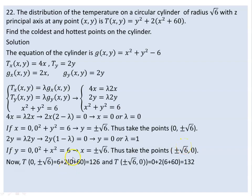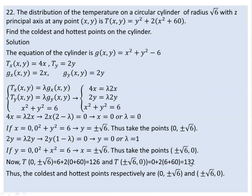We now evaluate the temperature at these candidate points. The temperature at (0, plus or minus radical 6) equals 0 plus some value. At (plus or minus radical 6, 0) the temperature is evaluated. So the coldest and hottest points respectively are identified at these points.